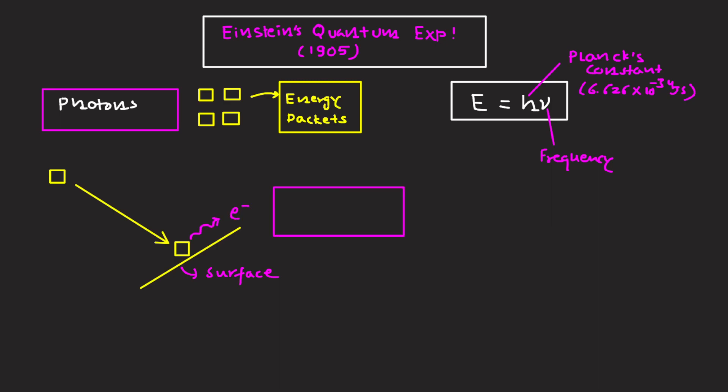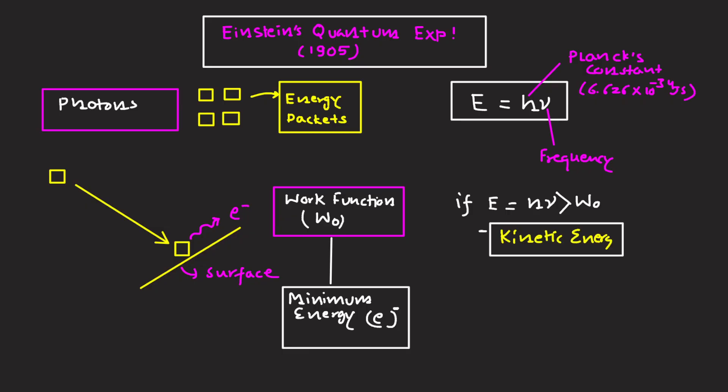Part of its energy is used to overcome the work function w naught, which is the minimum energy required to liberate an electron. If e is equal to h nu which is more than w naught, this extra energy appears as kinetic energy of the ejected electron. Thus h nu is equal to w naught plus kinetic energy, and kinetic energy is equal to h nu minus h nu naught. These equations are really important and I've seen in exams a lot of MCQs from this particular topic, which is photoelectric effect.